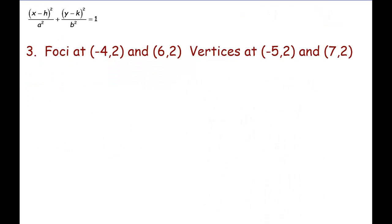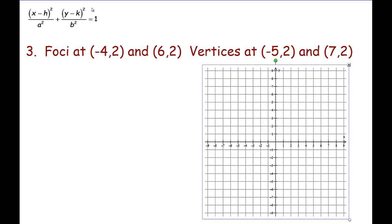I'm going to pull in my grid again because notice here we have a lot of points defined for us. This time we have foci at negative 4, 2, so negative 4, 2, foci, and then 6, 2, a foci. And then we're told at negative 5, 2 we have a vertex, and at positive 7, 2 we have a vertex.